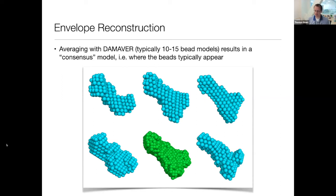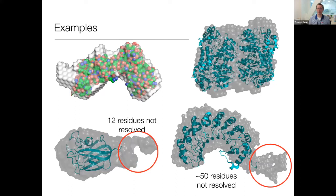Regarding why all beads behave the same: they do account for this. In DAMIN or DAMIF, there's a maximum of 12 contacts, and the algorithm takes the fraction of contacts to particle beads versus solvent beads into account in the penalty calculations for looseness and disconnectivity. Here are some examples of ab initio bead models overlaid with their crystal structures. In general, at low resolution, bead modeling does a pretty good job of giving the overall uniform density shape. The SAXS data can provide a little additional structural information beyond what's resolved in the crystal.